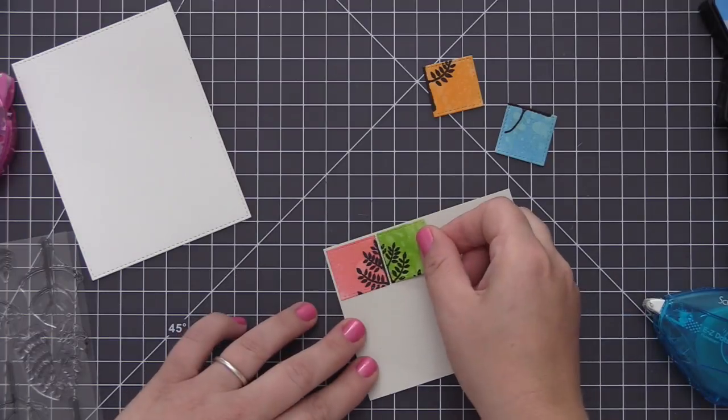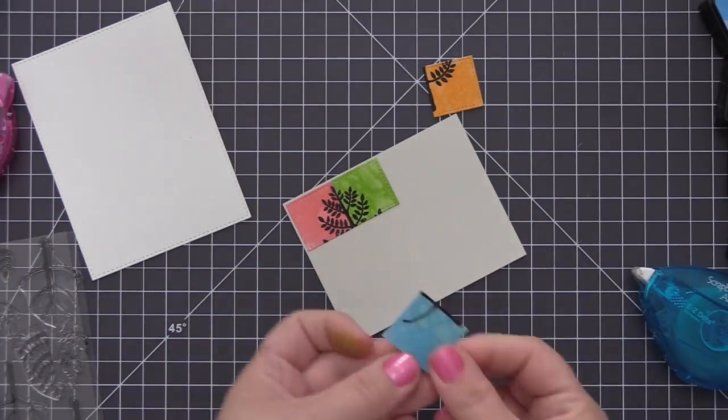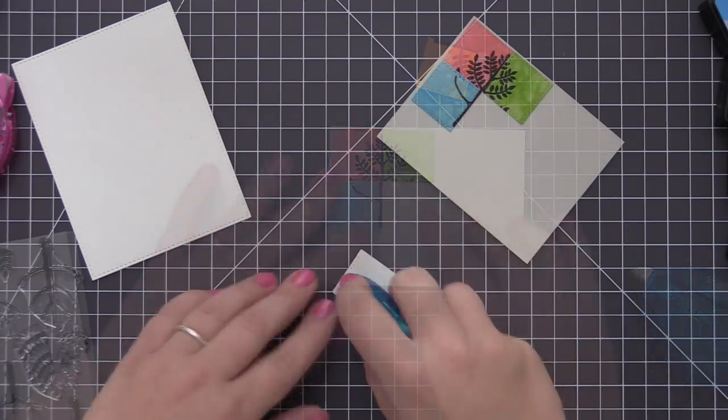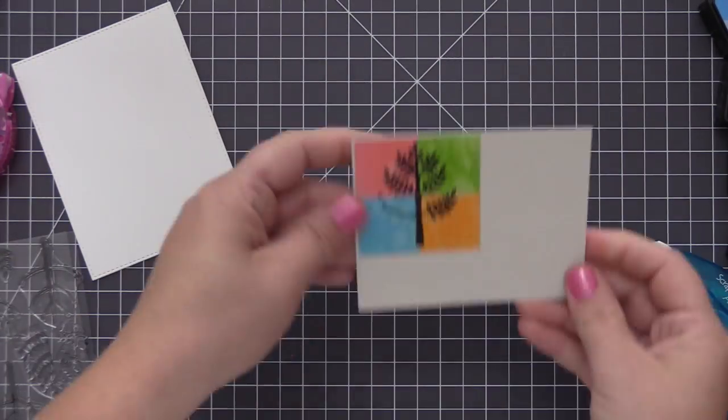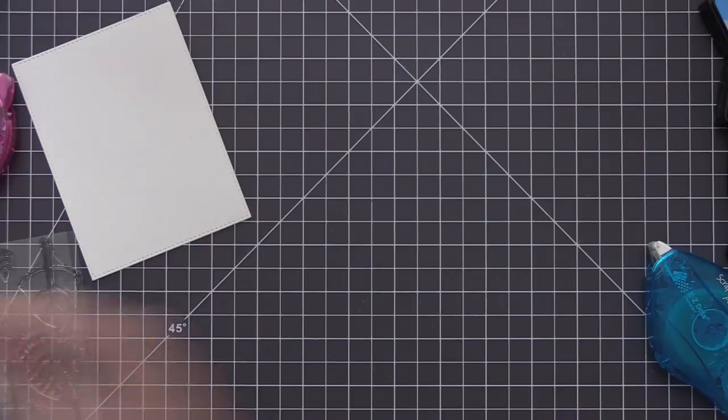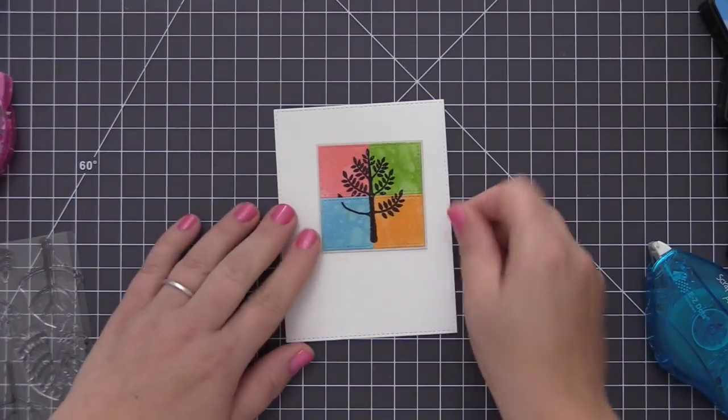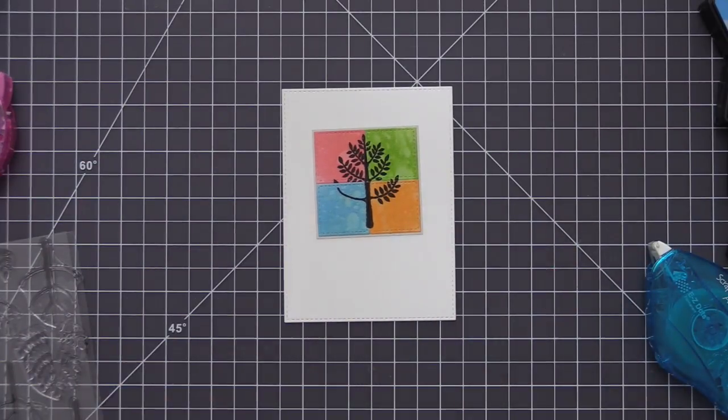Once again I'm adhering these directly to my cardstock panel using Grout Gray and I'm positioning these all back into the same position that I had them in the MISTI when I did the stamping. Now you can see we've put our tree all back together and then I trimmed that down to create a square panel that we can put on our card front.